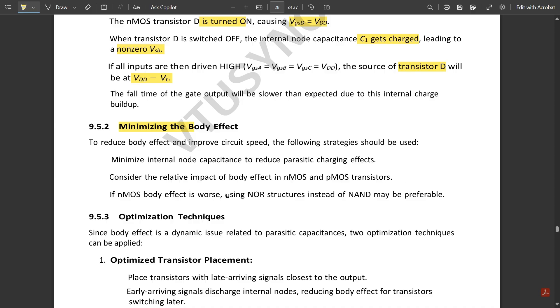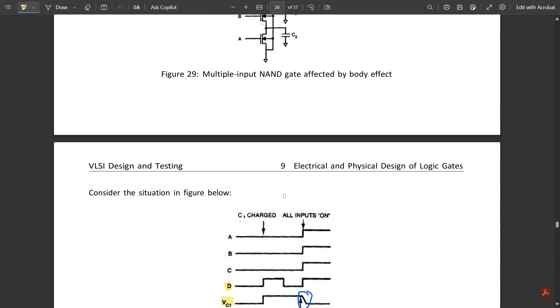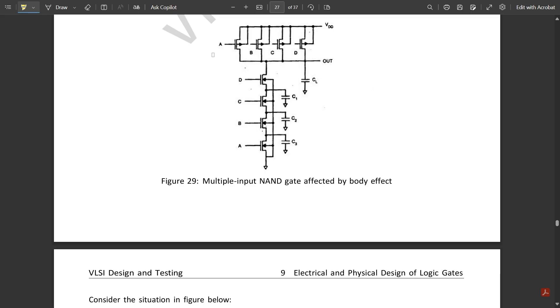If nMOS body effect is worse, use NOR structures instead of NAND may be preferable, since pMOS body effect is not so essential.